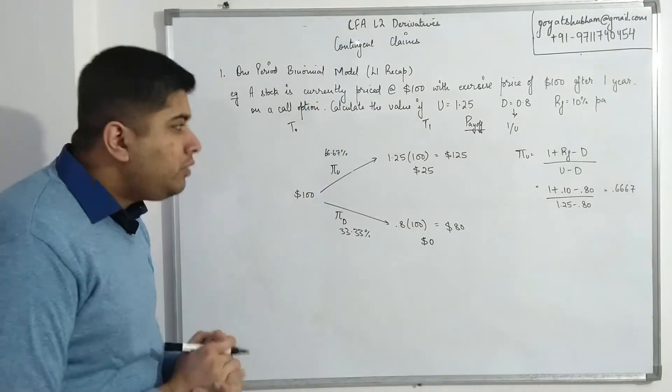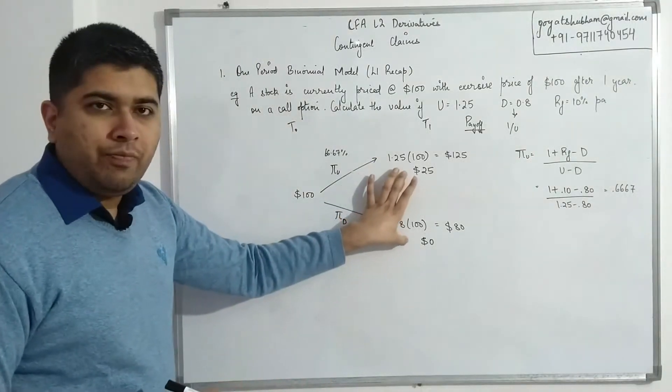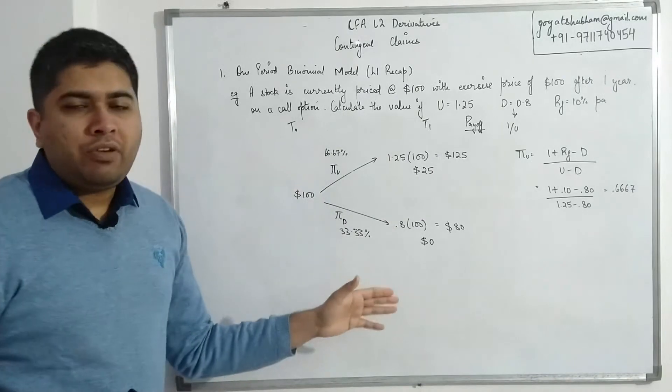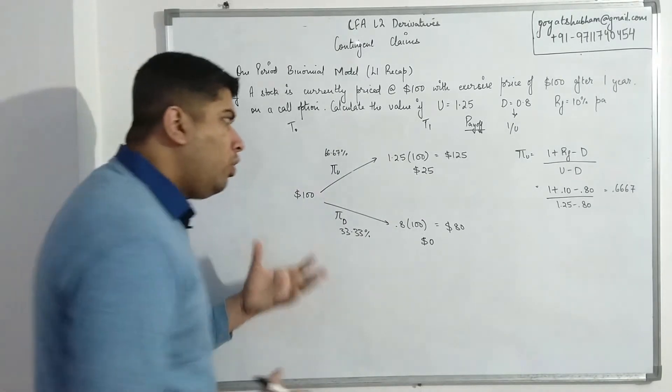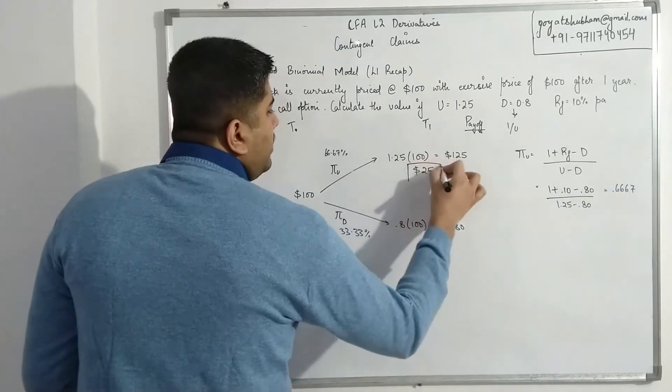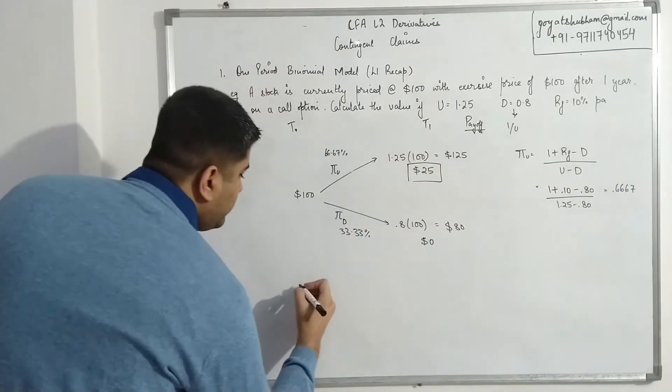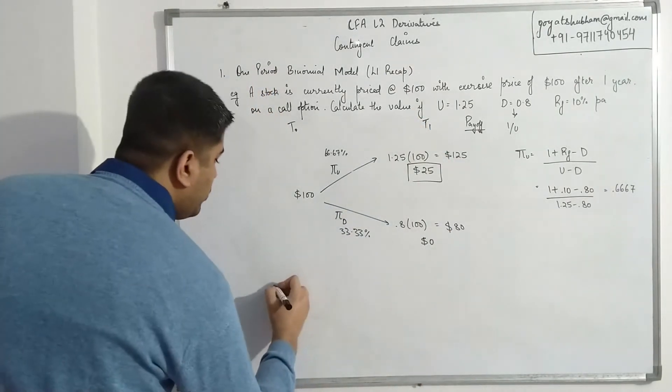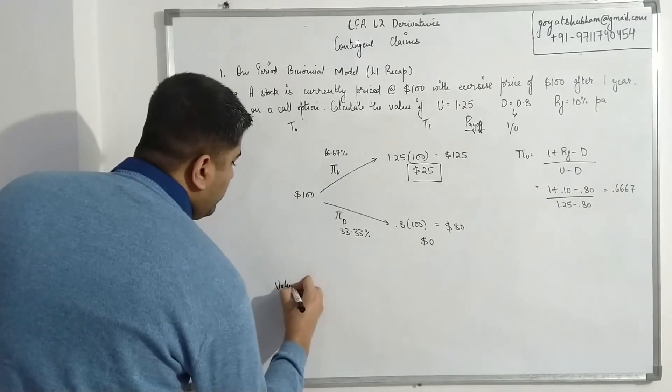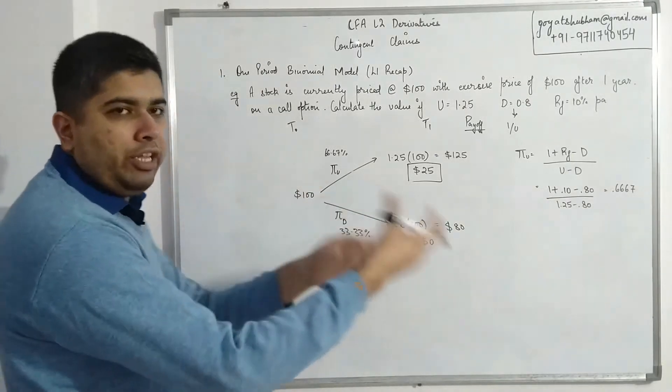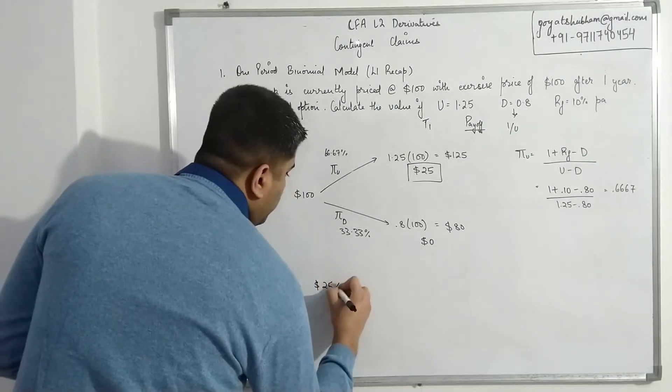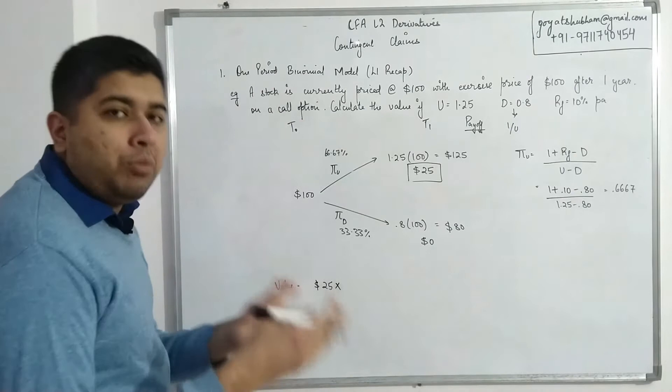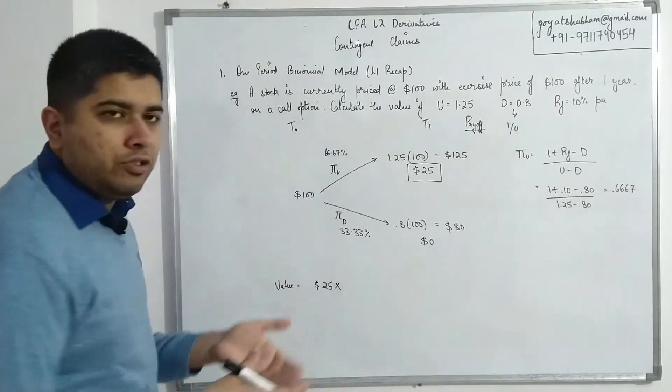Once we have these payoffs with us, we just introduce the concept of time value of money and just discount them. What is the probability of getting this 25 payment? If I want to calculate the value, value is simply whatever money you will receive in the future, so 25 dollars multiplied with what is the probability of me receiving 25 dollars?